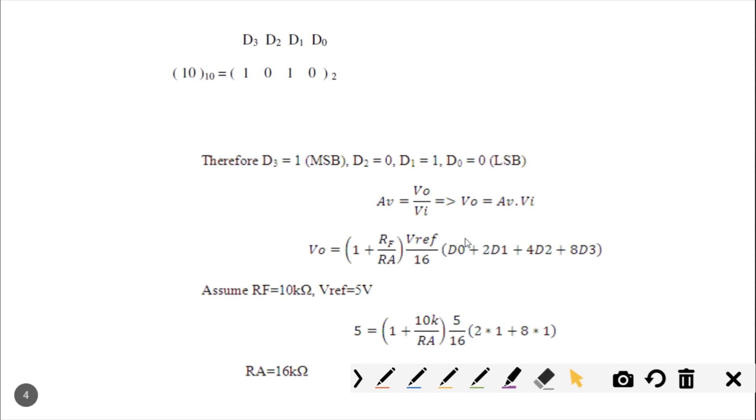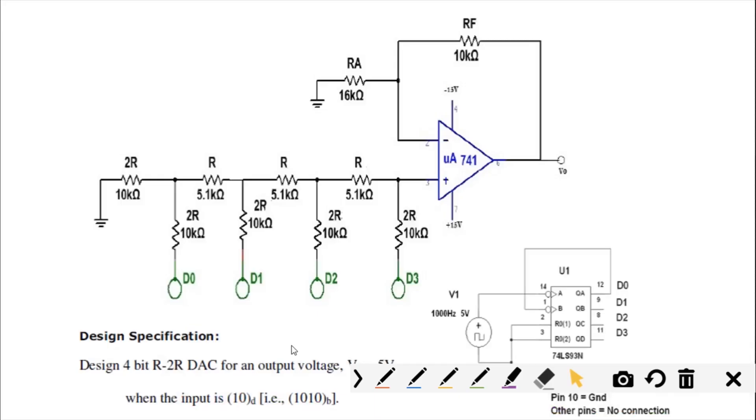Based on this, use the formula: AV = V0/VI which is gain, and V0 = (1 + RF/RA) × (Vref/16) × (D0 + 2D1 + 4D2 + 8D3), where the coefficients are 2^0, 2^1, 2^2, 2^3. Assuming RF = 10kΩ, you get 5 × (1 + 10kΩ/RA) × (5/16) × (value). Substitute accordingly and you will get the answer.